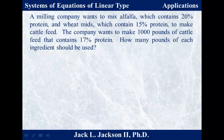Another example. A milling company wants to mix alfalfa, which contains 20% protein, and wheat mids, which contain 15% protein — a wheat byproduct — to make cattle feed. The company wants to make 1,000 pounds of cattle feed with 17% protein. How many pounds of each ingredient should they use?